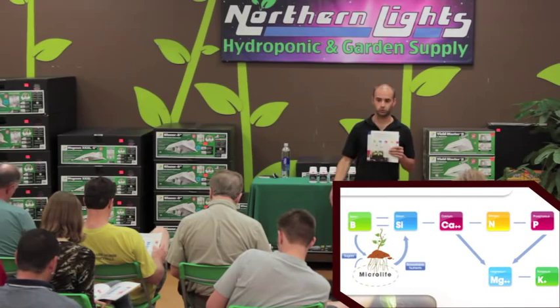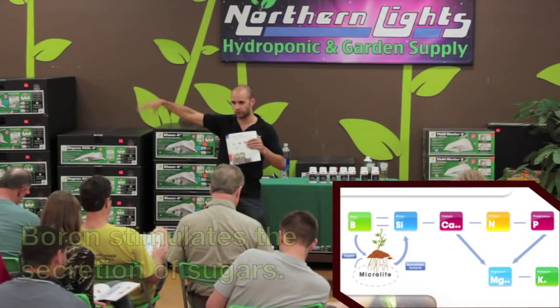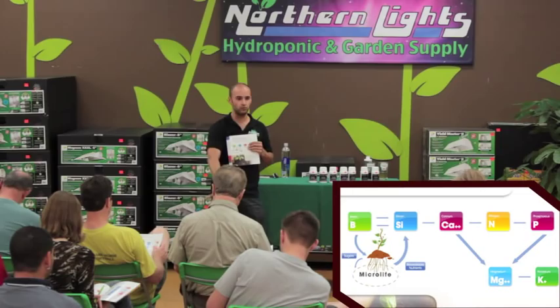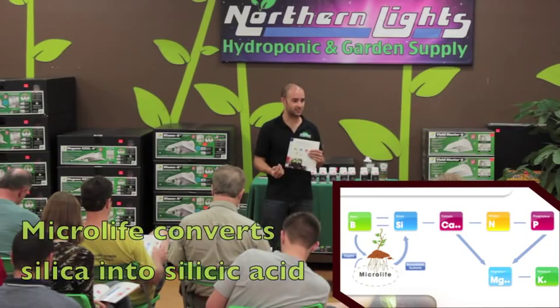Boron is the first one in the sequence because boron stimulates the secretion of sugars. This is the natural process, not an artificial environment. Boron will stimulate the secretion of sugars into your medium from the roots. It feeds the microlife. The microlife converts silica that's in the soil — liposiline is everywhere — into silicic acid.